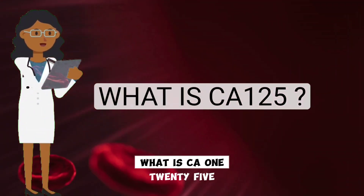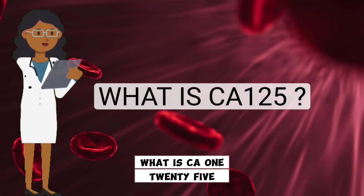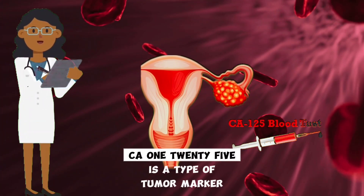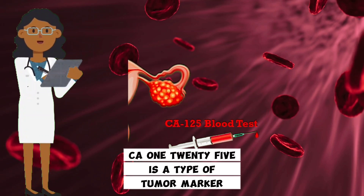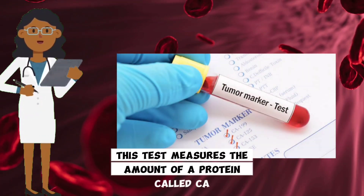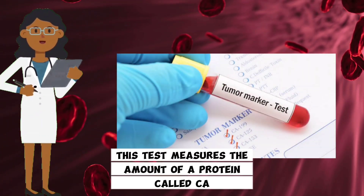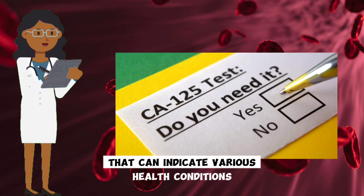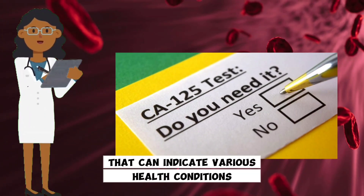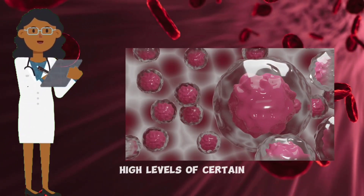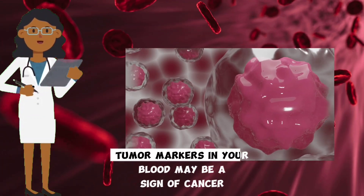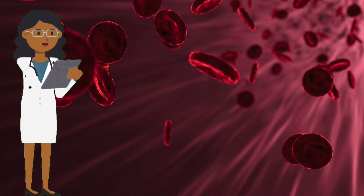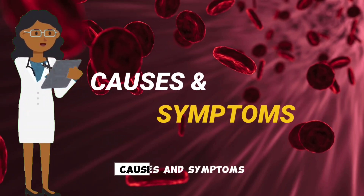What is CA-125? CA-125 is a type of tumor marker. This test measures the amount of a protein called CA-125 in a sample of your blood, which can indicate various health conditions. High levels of certain tumor markers in your blood may be a sign of cancer.